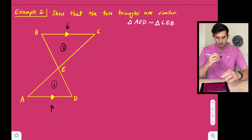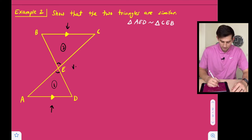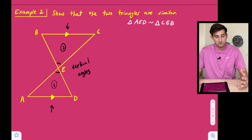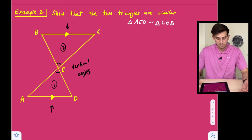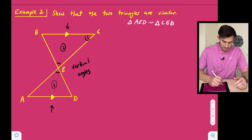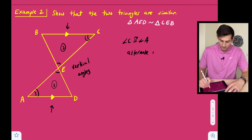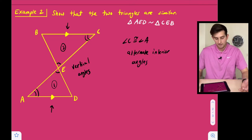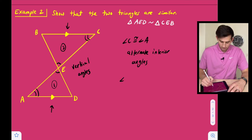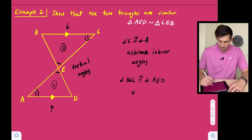Whenever we have this X-figure, we know that the two angles are congruent because they are vertical angles. We can also pick two other angles that are congruent because of the parallel lines — angle C and angle A — because they are alternate interior angles, and alternate interior angles are congruent. So angle BEC is congruent to angle AED because those are vertical angles.